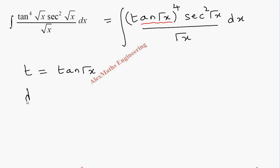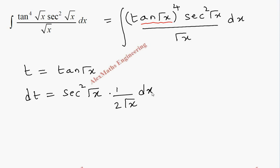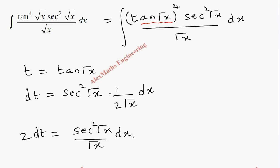The differentiation of tan is sec², and we write the inner function as it is by chain rule: differentiation of √x is 1 by 2√x, dx. Carrying the 2, we get 2 dt equal to sec²(√x) divided by √x, into dx.